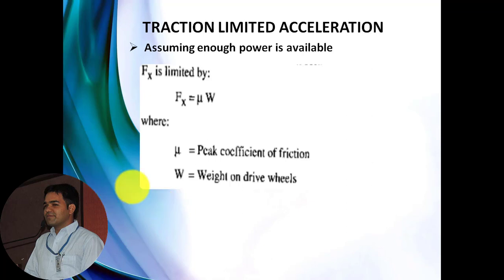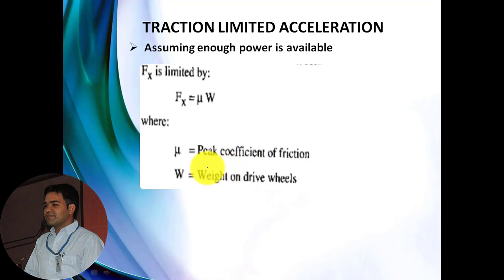From the basic fundamental equation, we can say FX equals mu times W, where FX stands for the tractive effort in the longitudinal direction, mu is the peak coefficient of friction, and W is the weight on the drive wheels. Mu mainly depends on the friction due to the road surface and the tire surface, so you can consider mu as a constant term.